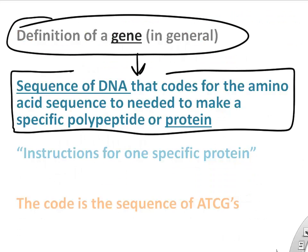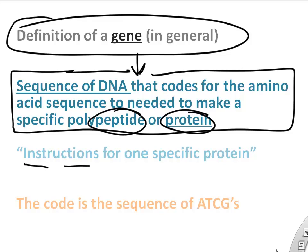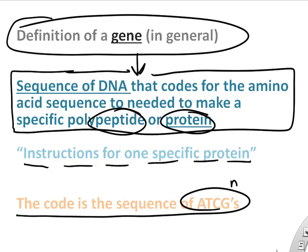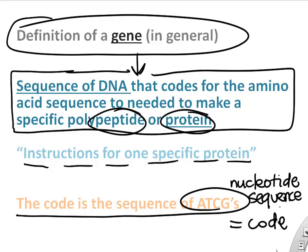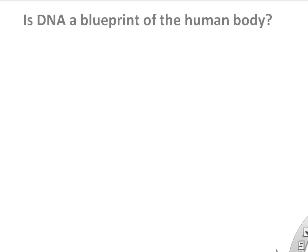Some definitions you can try to memorize for a gene: a sequence of DNA with the information to build a specific peptide or protein — just instructions to build a protein. When we talk about the code, we're talking about the A, T, C, G's and their specific sequence.